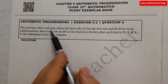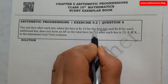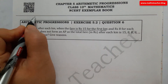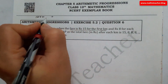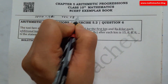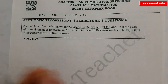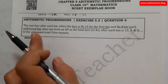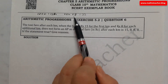Question 6: Is the taxi fare after each kilometer forming an AP, when the fare is 15 rupees for the first kilometer and 8 rupees for each additional kilometer? So the first kilometer rate is 15 rupees and the additional per-kilometer rate is 8 rupees. For 2 kilometers: 15 plus 8 equals 23.